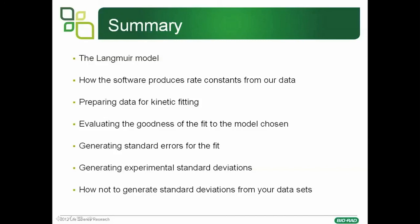Hopefully I've shown you what the Langmuir model means and how the software produces rate constants from our data — with an initial guess and then minimising the residuals. Some tips for preparing your data for kinetic fitting, looking for dose response, etc. How you might evaluate the goodness of the fit visually and then statistically. How you generate standard errors for the fit, and how these are different from generating experimental standard deviations. And a final example of how not to generate experimental standard deviations from your dataset. Thank you.